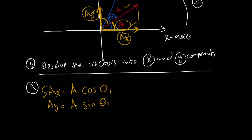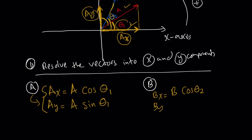I have now resolved vector A into its components. I'm going to do the same with vector B. Bx equals B cosine theta 2 — because theta 2 is trapped between vector B and the x-axis. And By equals B sine theta 2. I have now resolved the components for both vector A and vector B.